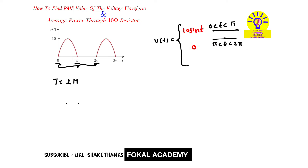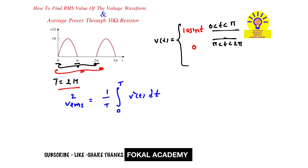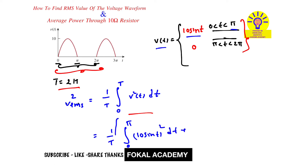Now we want the RMS value. We know that V_rms² = (1/T) × integral from 0 to T of v²(t) dt. Since we have two equations over 0 to 2π, this can be written as (1/T) × [integral from 0 to π of (10sin(t))² dt plus integral from π to 2π of (0)² dt].